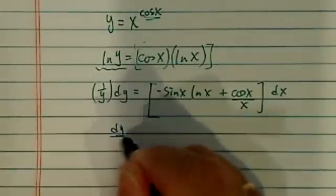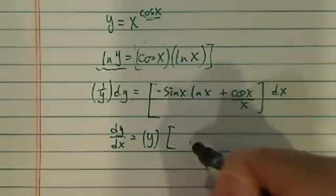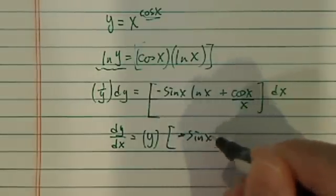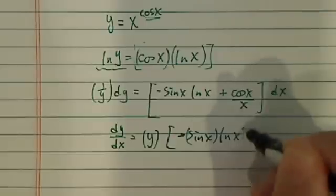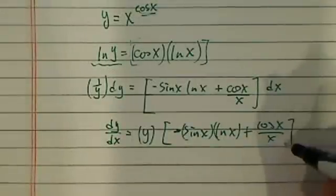Combine that, I have dy over dx equal to y times this big long mass here. So I have minus sine x times natural log of x, plus cosine of x over x.